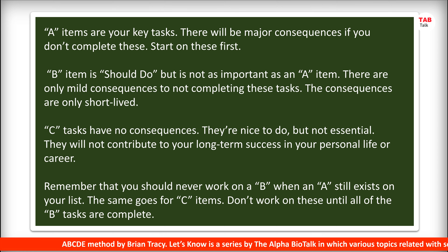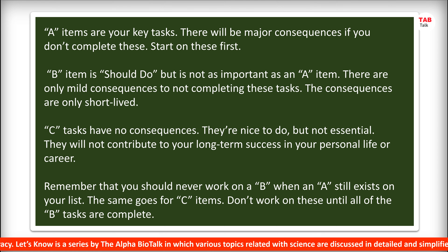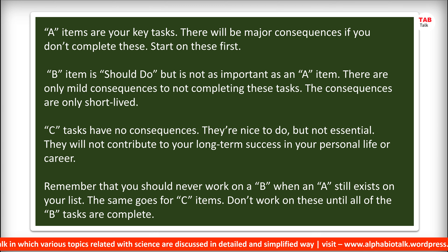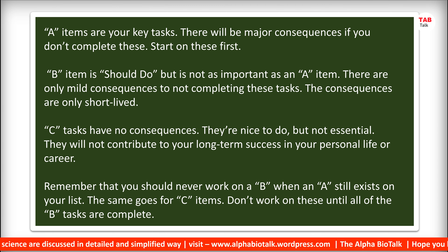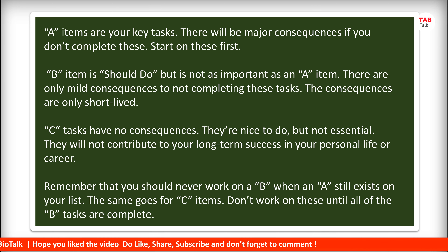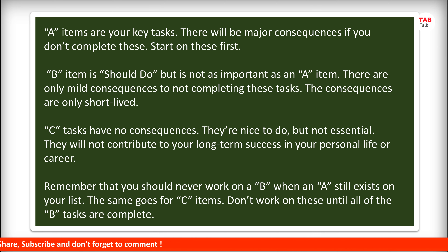A items are your key tasks. There will be major consequences if you don't complete these — start on these first. B items are tasks you should do, but they are not as important as an A item. There are only mild consequences to not completing these tasks, and the consequences are only short-lived.